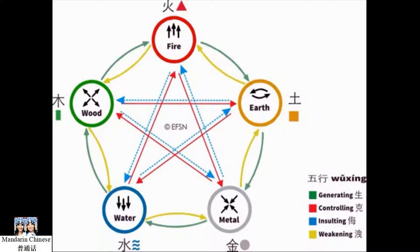The theory explains that substances can be divided into one of five basic elements: water, wood, fire, metal, and earth. Each element contains its own specific characteristics and properties.